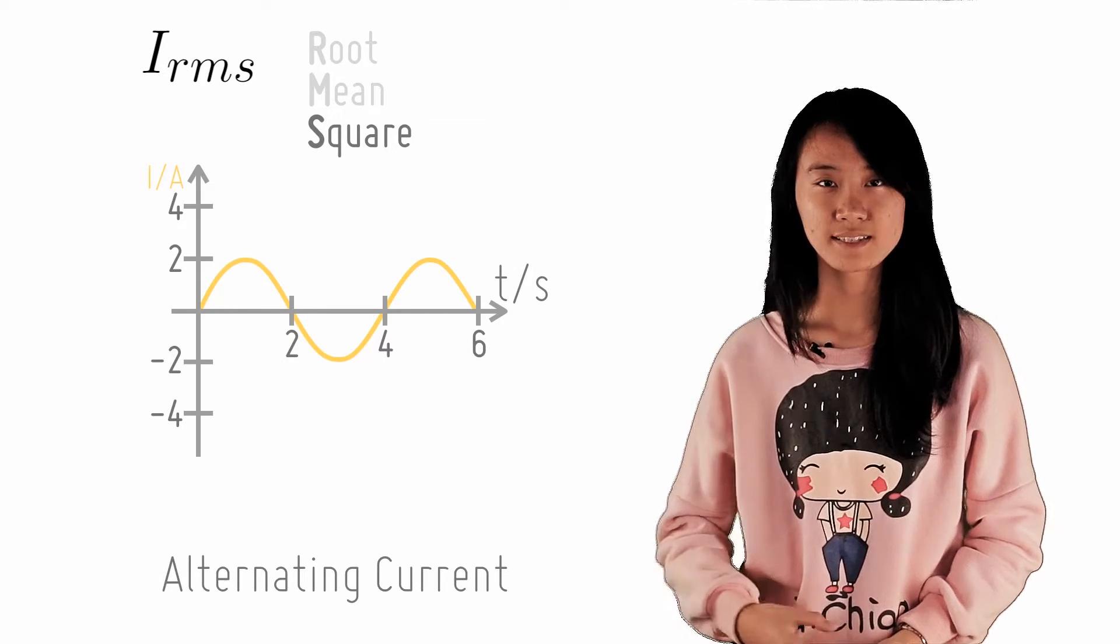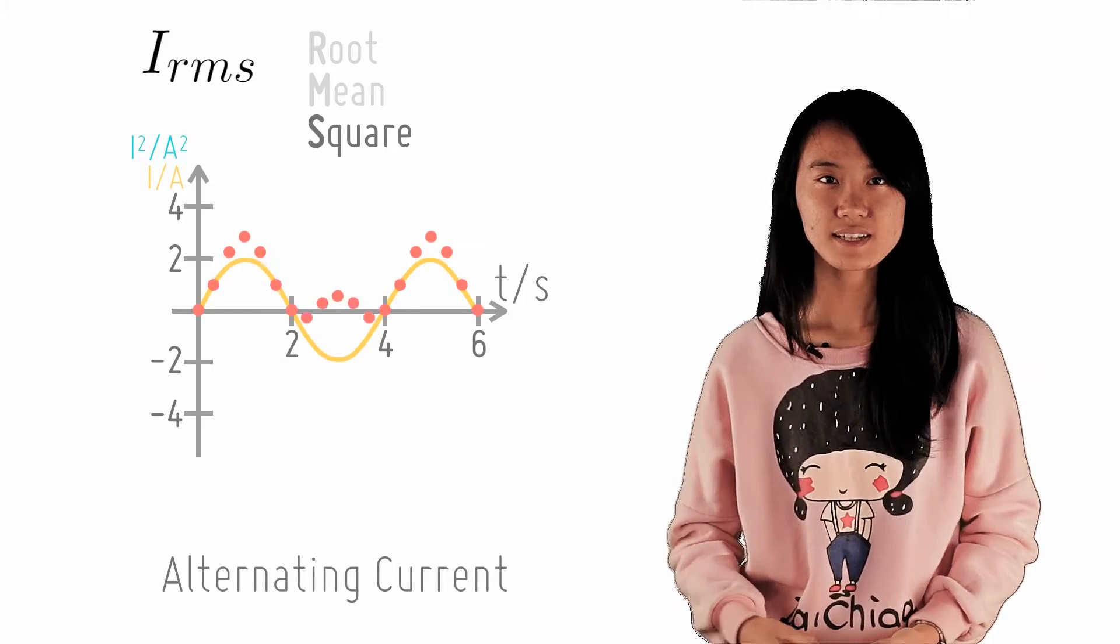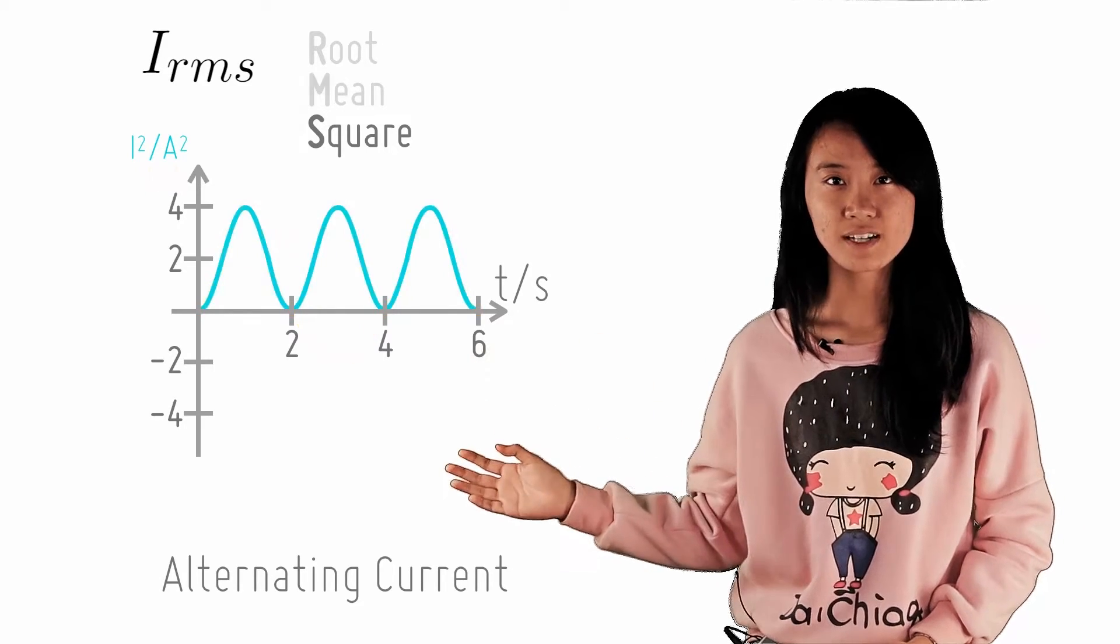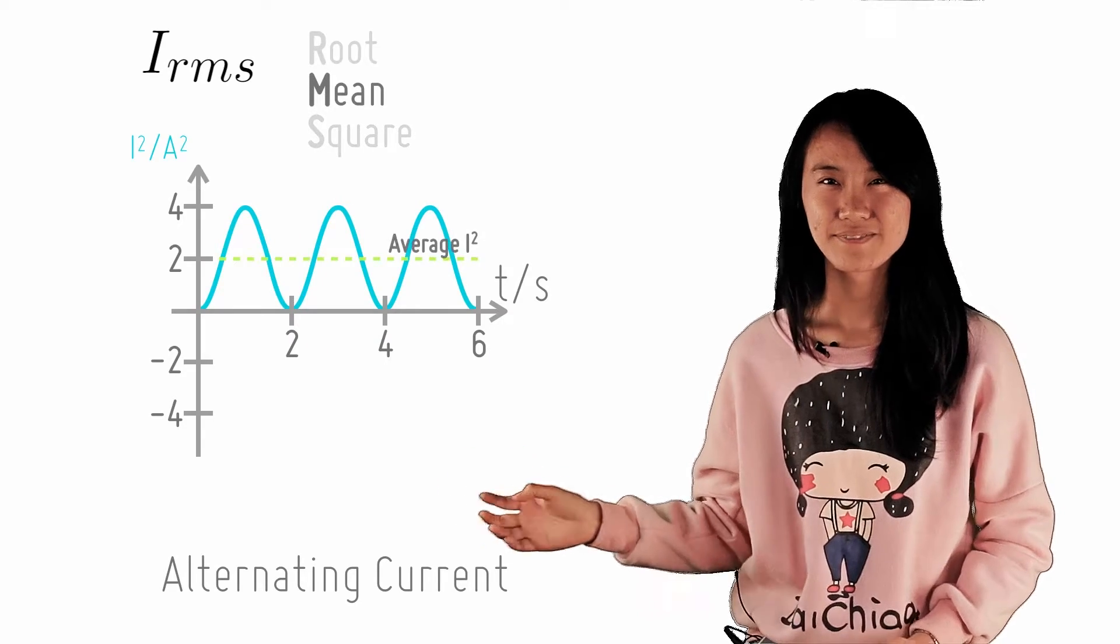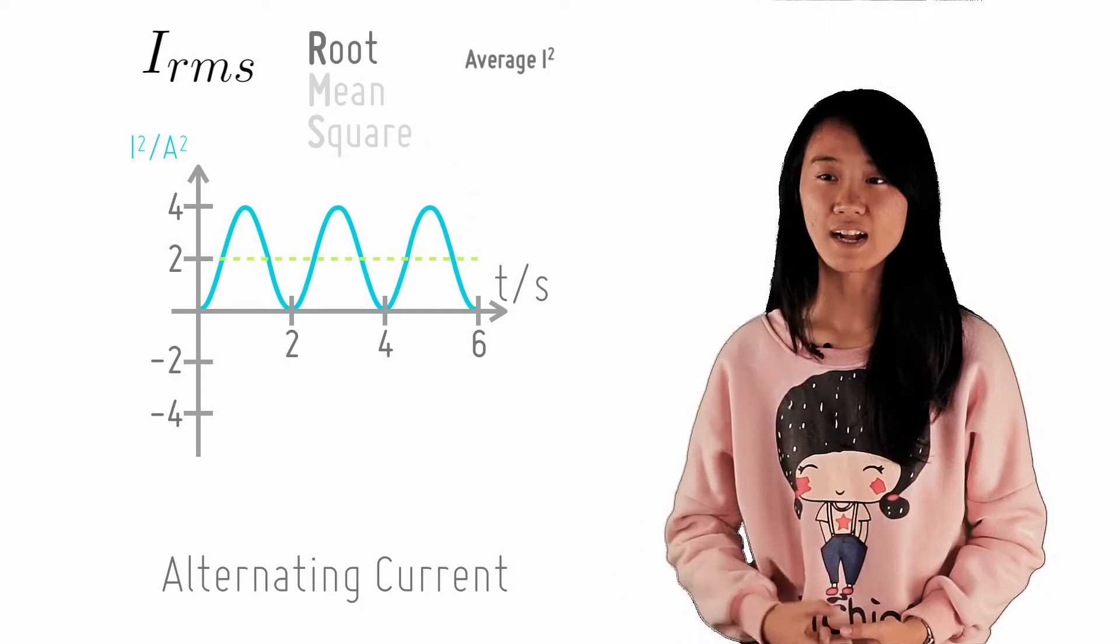Our first step is to square the set of values. The graph will be transformed accordingly. Next, you take the average or the mean of the square of the current. Finally, you take the square root of this average value to obtain the RMS value.